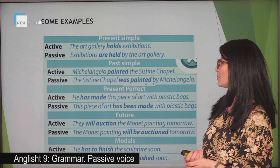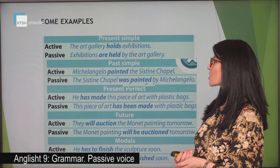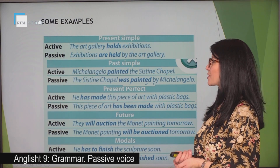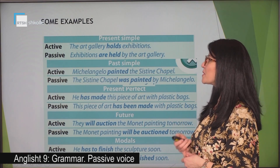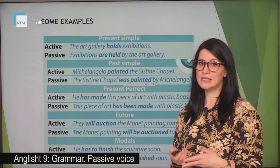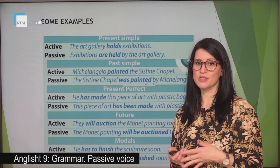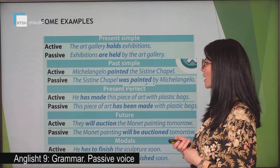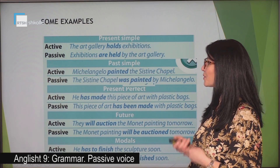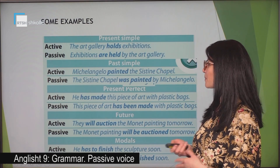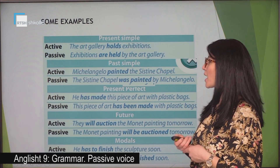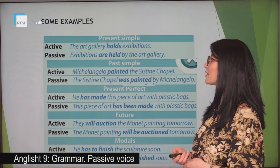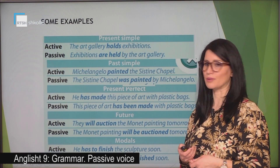Present simple: the art gallery holds exhibitions. The verb is 'hold' and it is in the present simple. So have a look at the verb 'to be' and the verb in past participle: exhibitions are held by the art gallery.